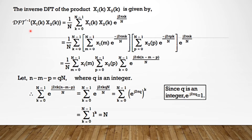IDFT of X1(k) X2(k) by definition equals 1 by N sigma from k equal to 0 to N minus 1 of X1(k) X2(k) e raised to j 2 pi nk by N. Now substitute the values of X1(k) and X2(k) in this equation. Then it equals 1 by N sigma k from 0 to N minus 1, sigma m from 0 to N minus 1 of x1(m) e raised to minus j 2 pi mk by N, into sigma p from 0 to N minus 1 of x2(p) e raised to minus j 2 pi pk by N, into e raised to j 2 pi nk by N.